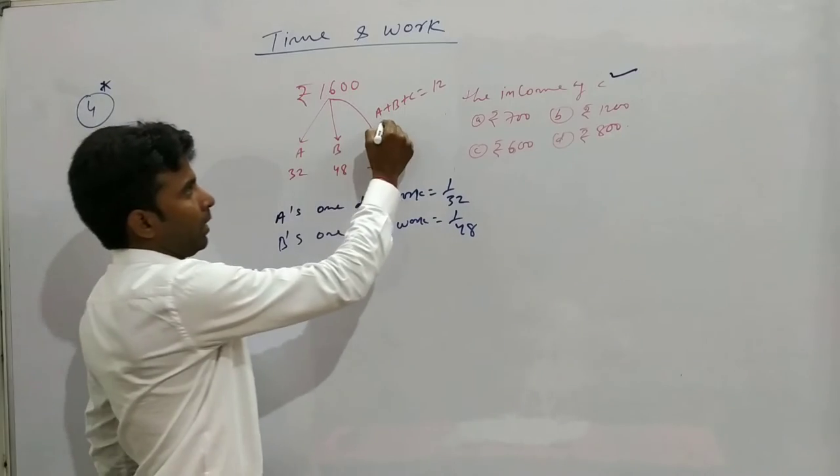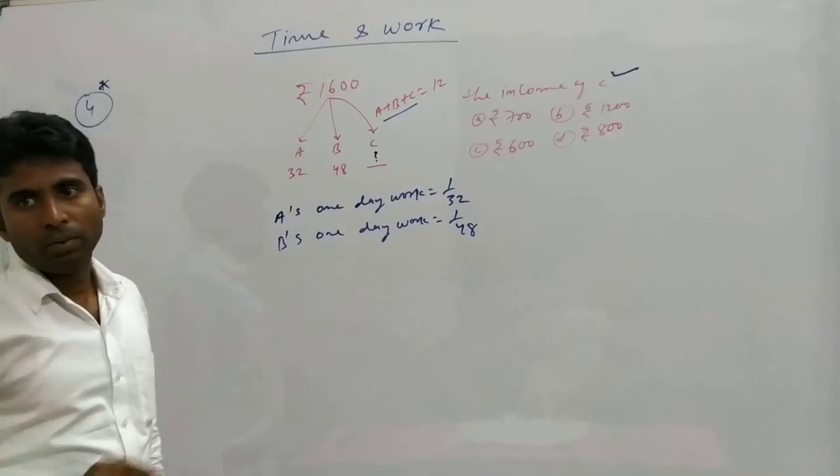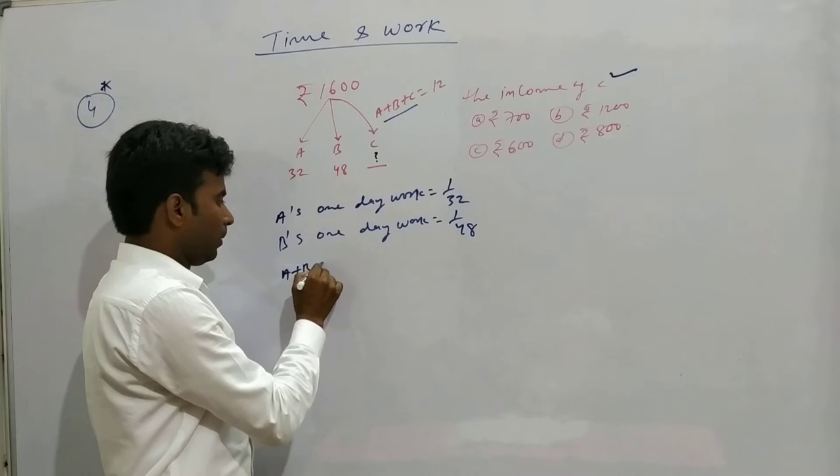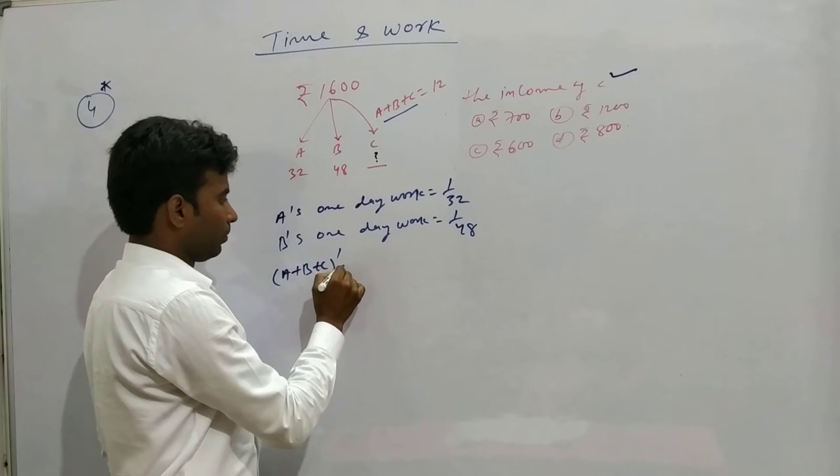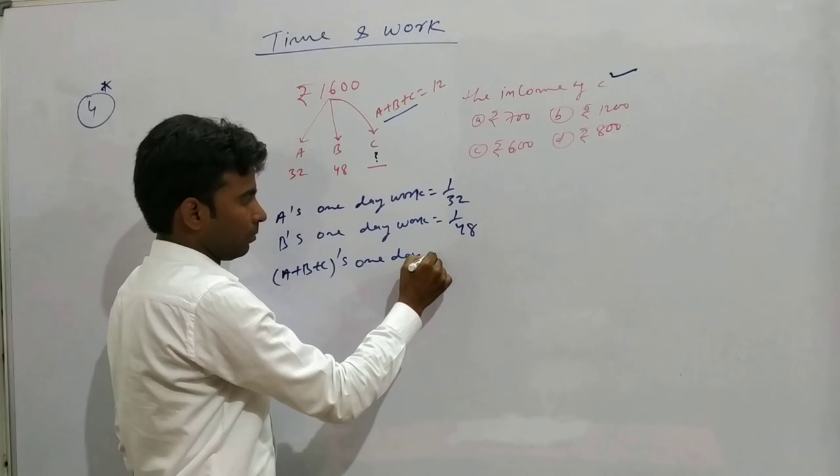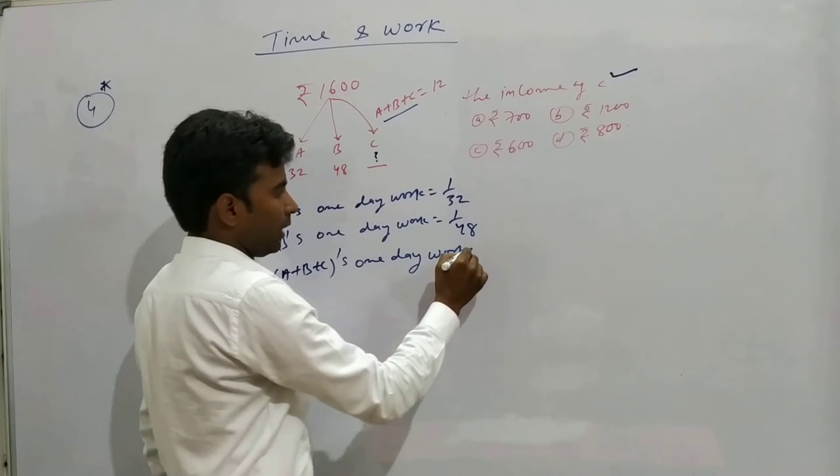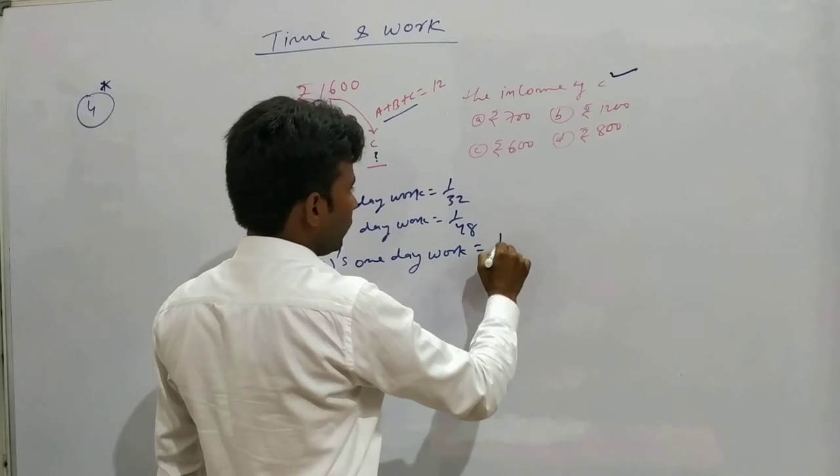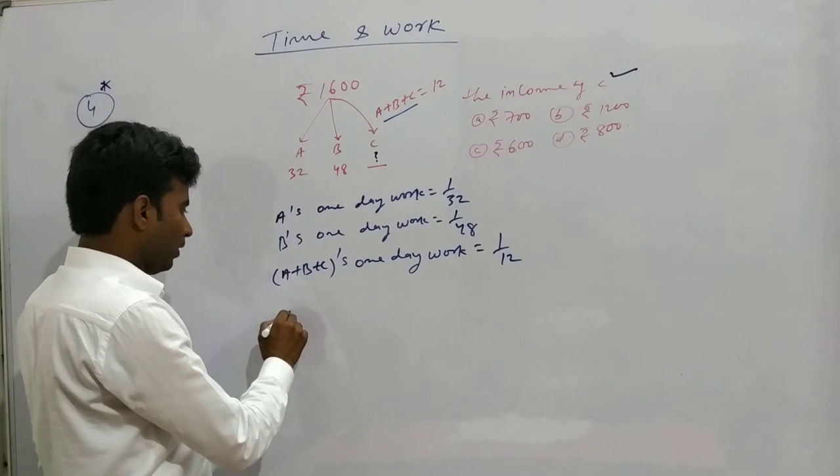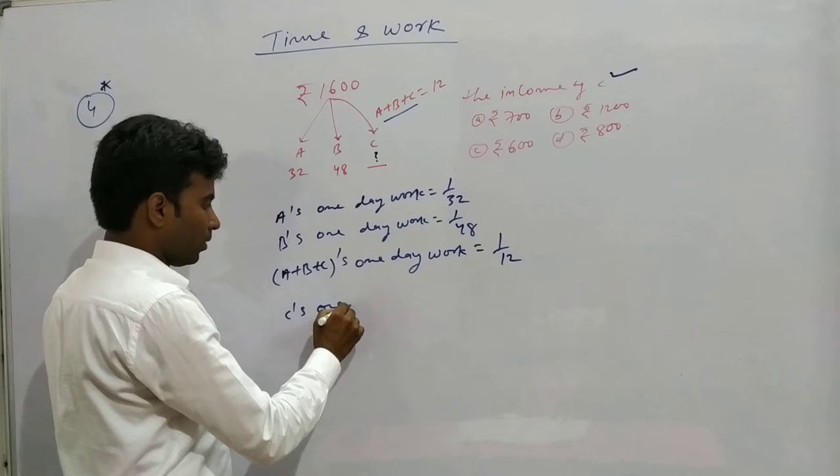A plus B plus C together, one day work equals one upon 12 days.